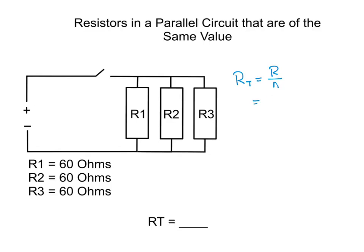So in this case, we have 60 ohms divided by 3 resistors, which will equal 20 ohms.